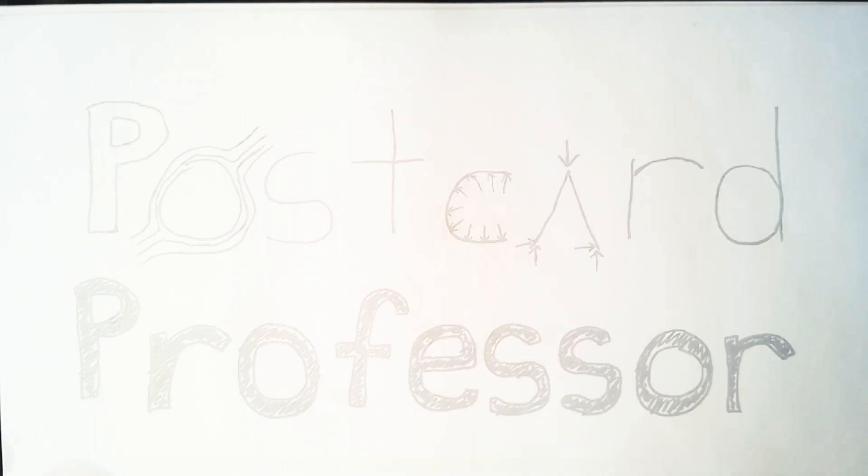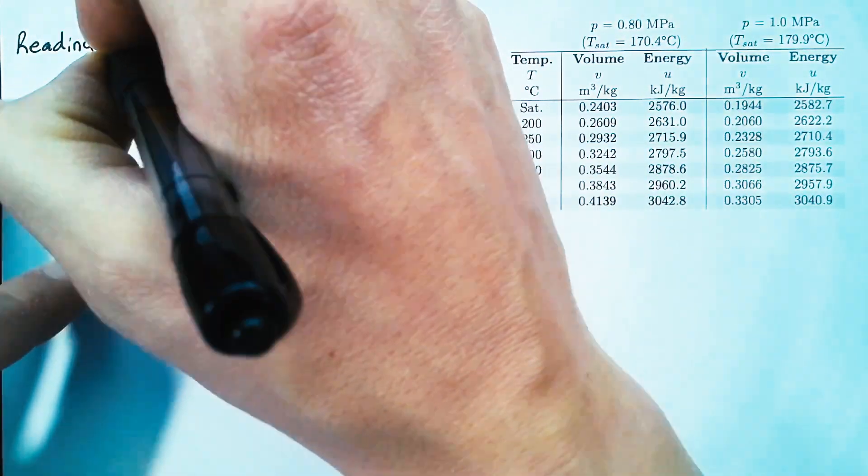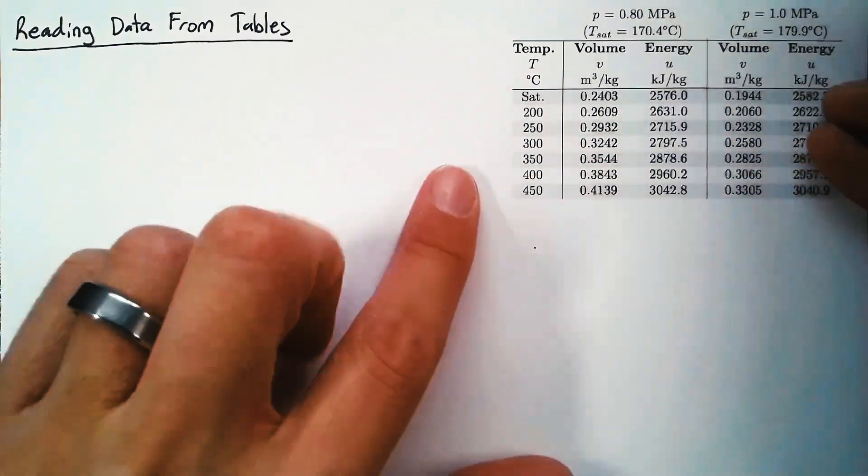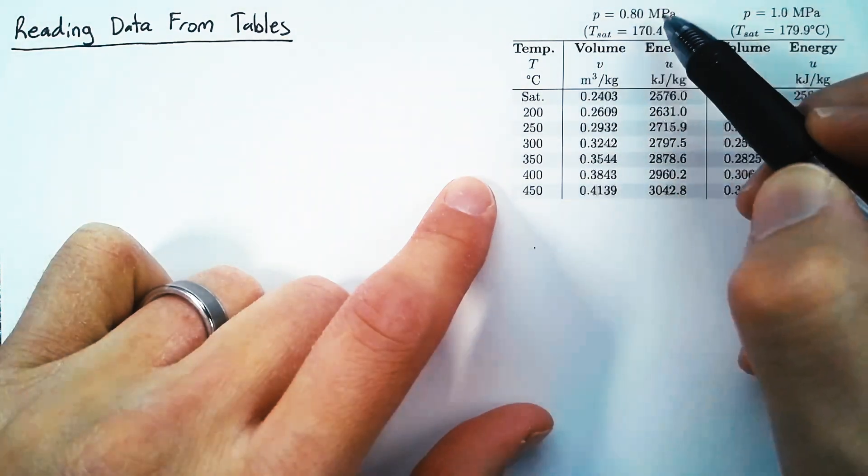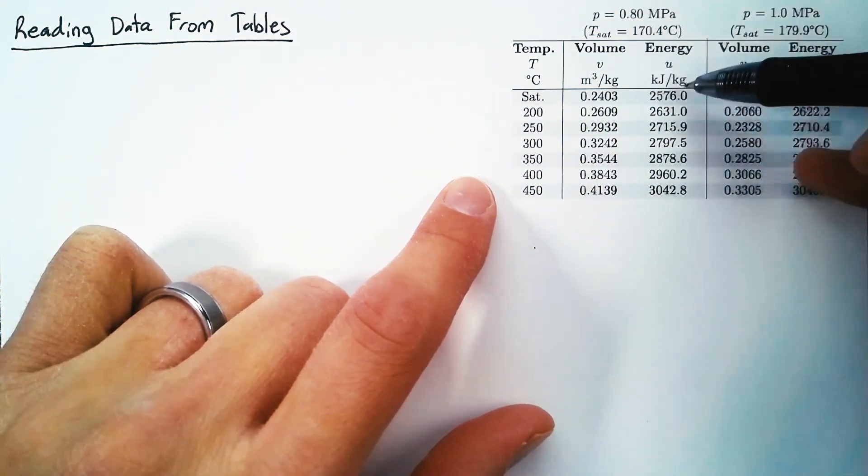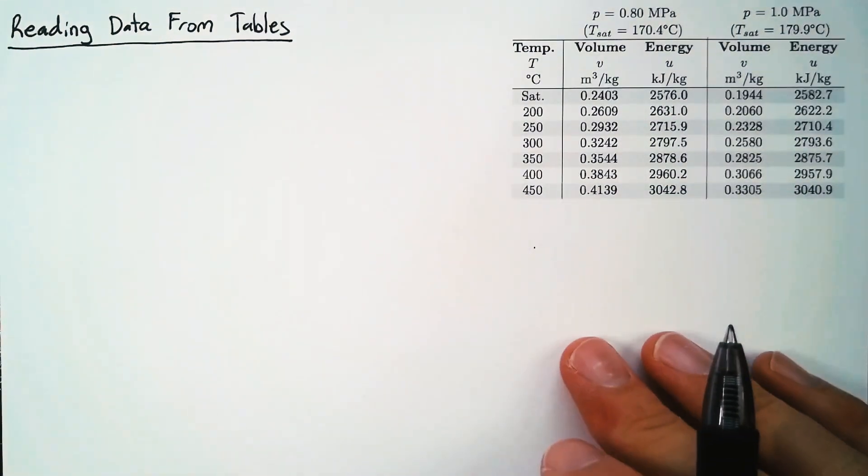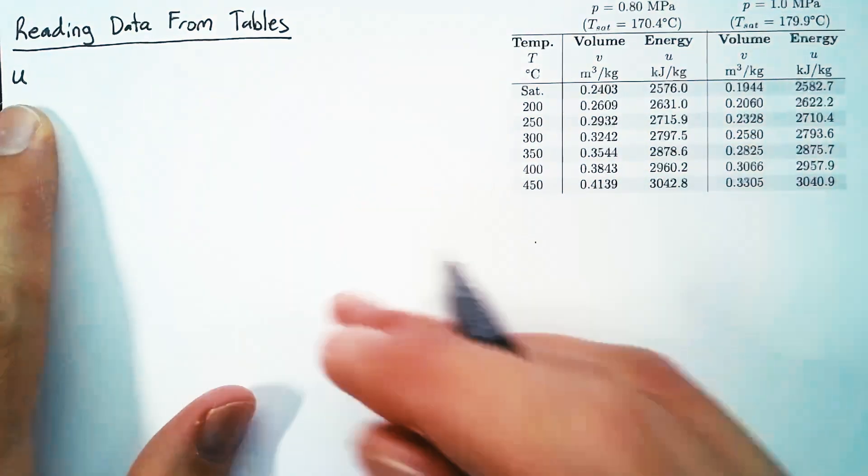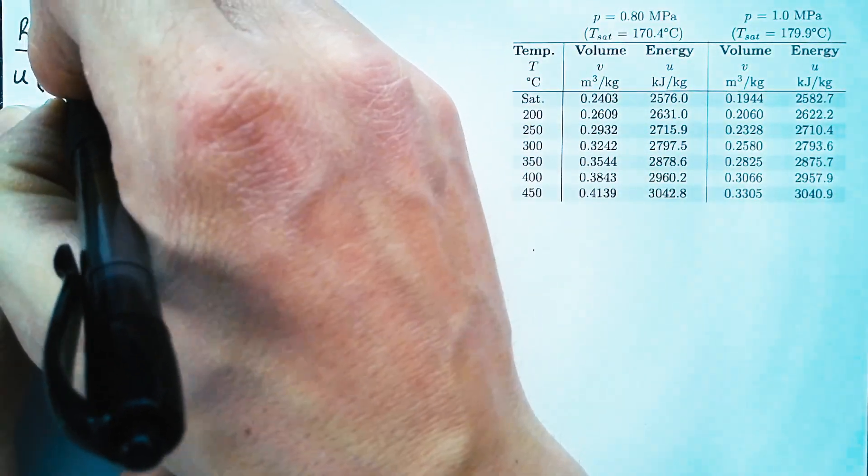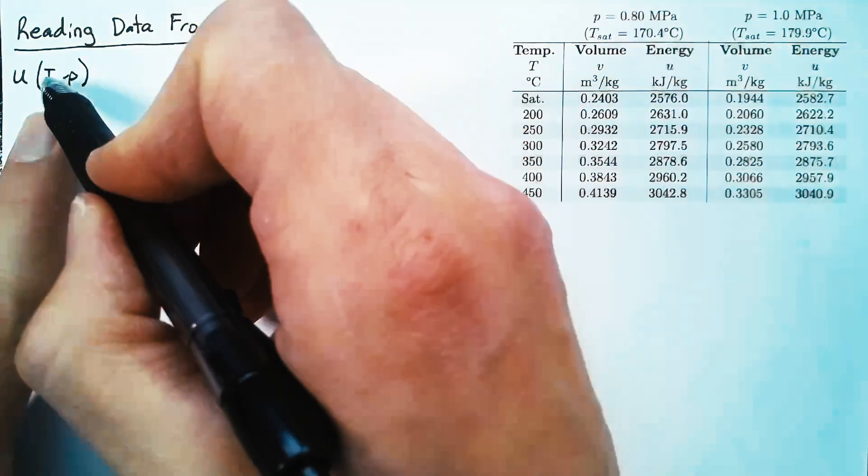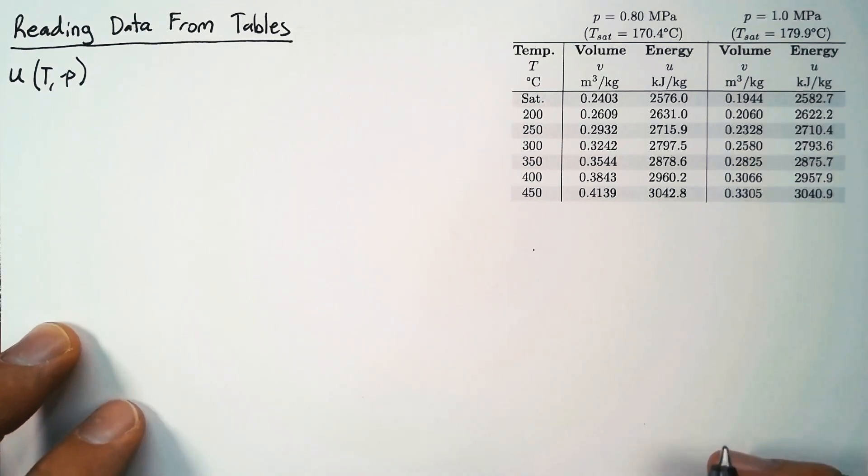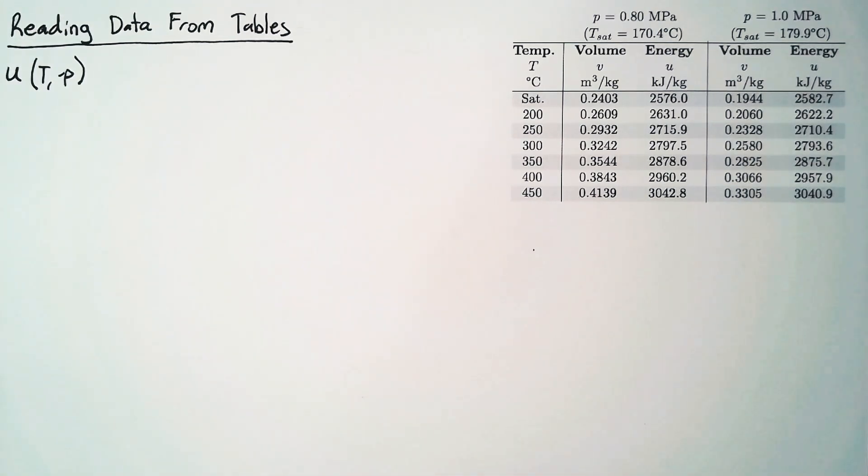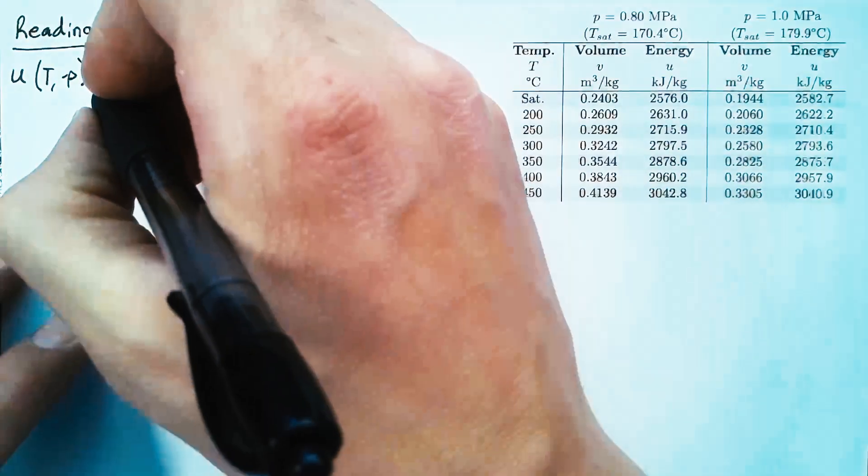Hello and welcome to the Postcard Professor, where we take complex ideas and explain them in the space of a postcard. In this video, we're going to be reading data from tables. I have a steam table that links temperature and pressure with specific volume and internal energy. Our goal is to calculate the internal energy at a specific temperature and pressure. For any state, we should know two values and be able to figure out any third value. We'll use linear interpolation to find a value that's not exactly on the table.